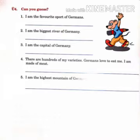What is the favorite game of Germany? Football is the answer. What is the longest river of Germany? Rhein is the answer. What is the capital of Germany? Berlin is the capital of Germany. What is the German word for sausage? The answer is Wurst. And the fifth answer relates to Zugspitze. This is all, thank you.